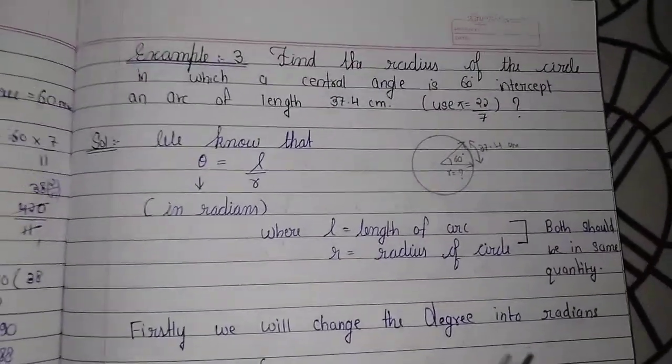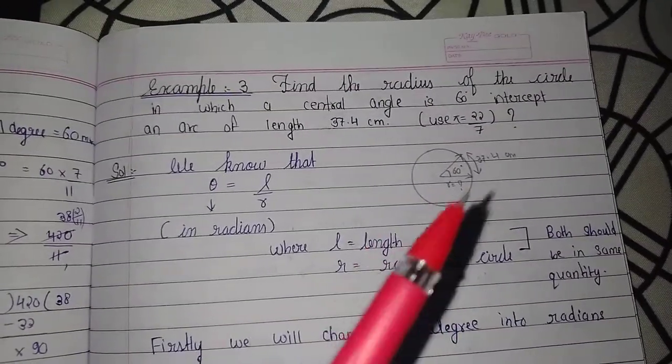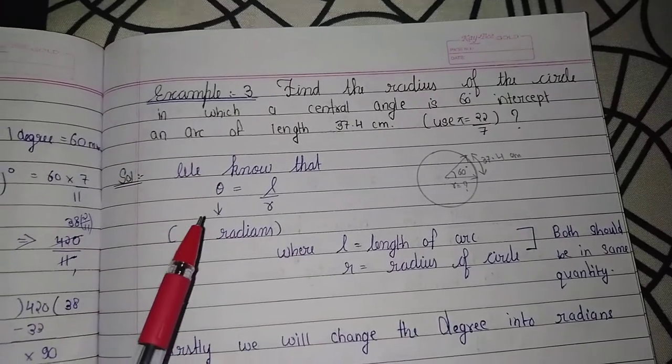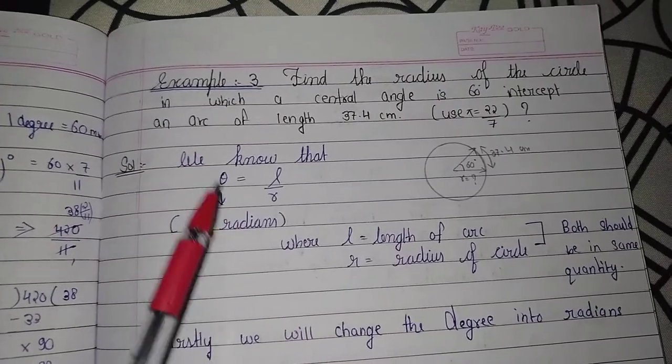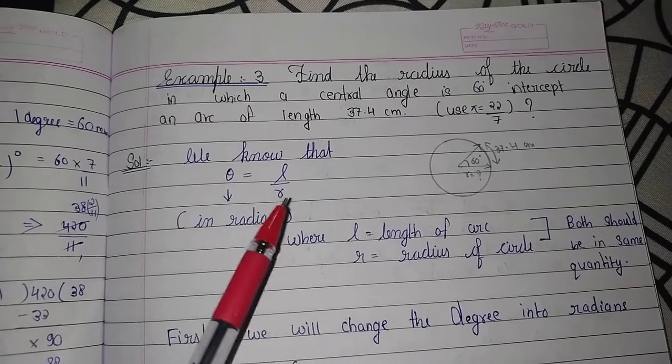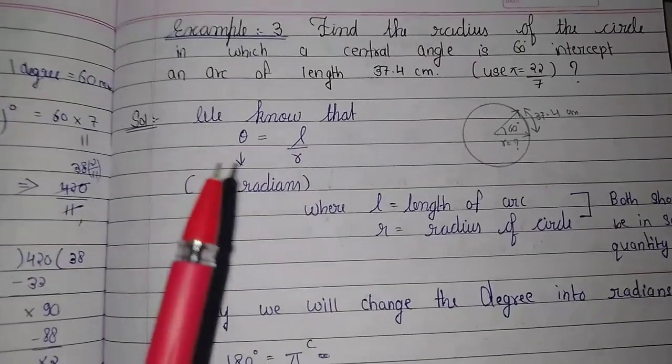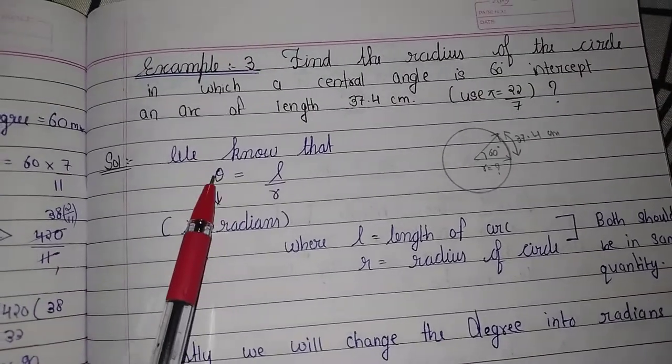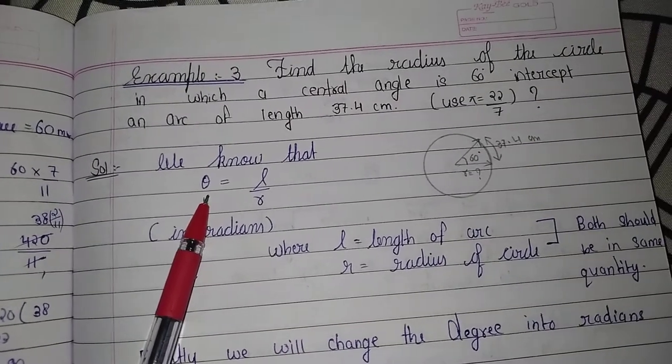So now we have to find R. We have a formula: theta equals L upon R, where L is the length of arc and R is the radius of the circle. But the value of theta should be in radians.